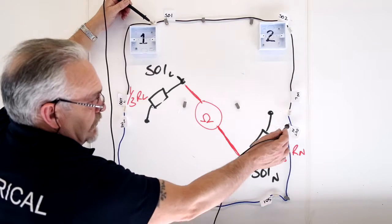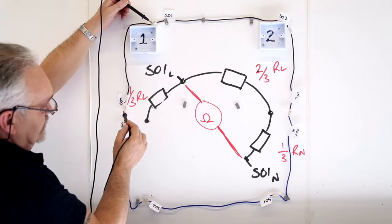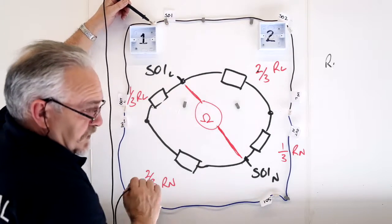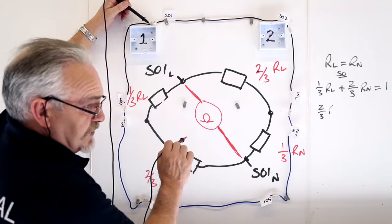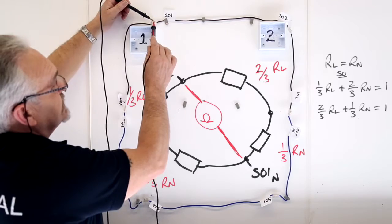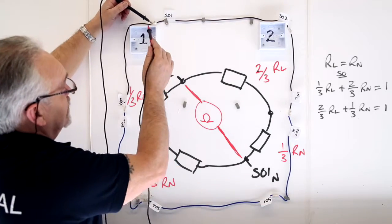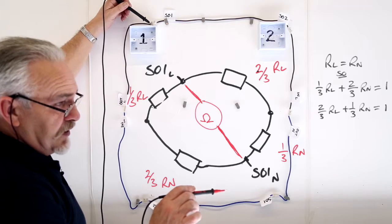So I have, from here, one third, two thirds. One third, two thirds. One third plus two thirds is equal to two thirds plus one third is equal to one whole. So in other words, resistance there and there is the same. They're in parallel.